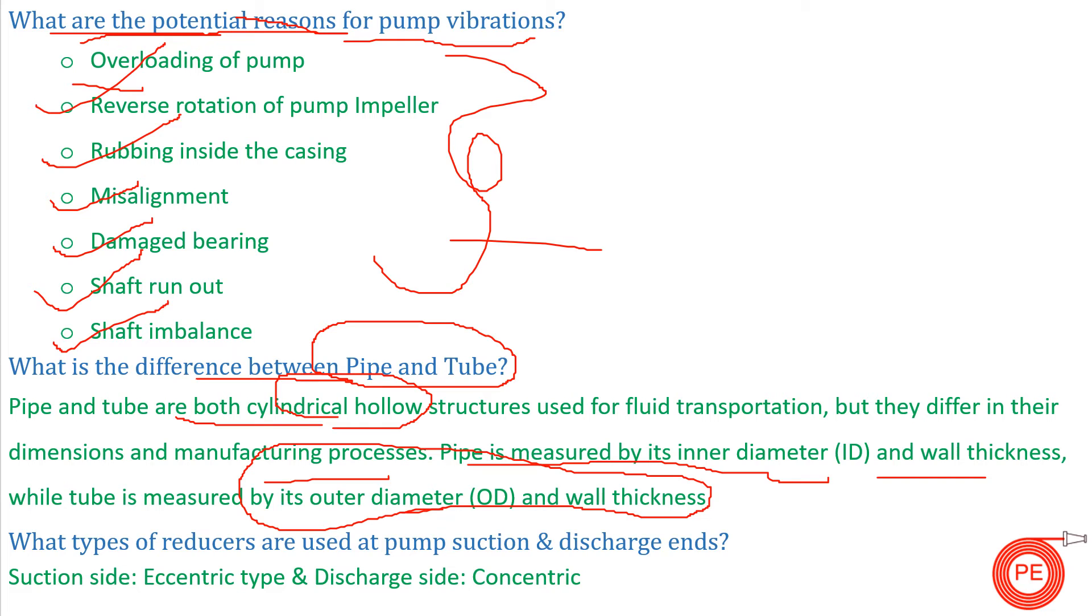What type of reducers are used in pump suction and discharge? In pump suction side, we use eccentric reducer. We don't want to have cavitation in our pumps, so because of this we use eccentric reducer. We have a video on eccentric and concentric reducers; we will put a link in the i-button. In discharge, we use concentric reducer. These two types of reducers are used in pump suction and discharge.